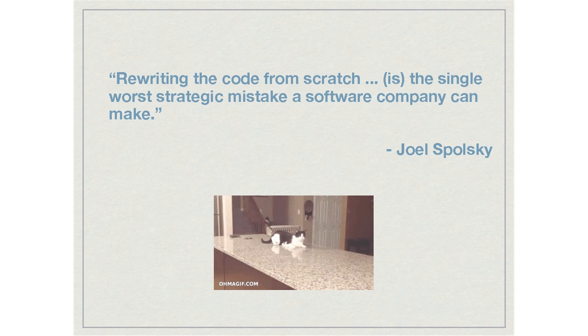We knew we had to change things, but we were mindful that we couldn't start from scratch. There's a famous quote: 'Rewriting code from scratch is the single worst strategic decision a company can make.' This references Netscape going from version 4 to 6, where they abandoned everything for three years while rebuilding. By the time they got it out, IE was so far ahead they couldn't recover. We couldn't just start again and work towards a new version at some point in the future — it would all go horribly wrong at go-live.